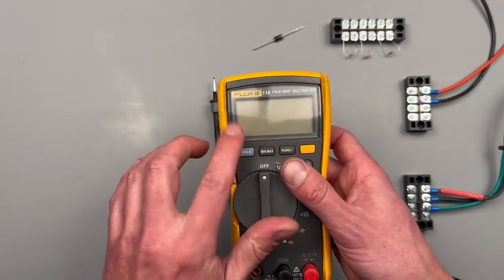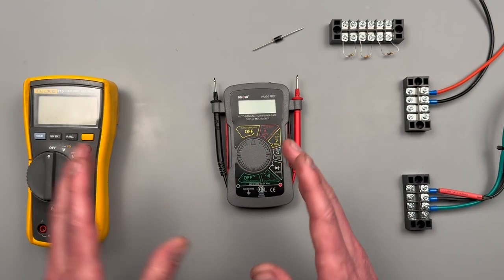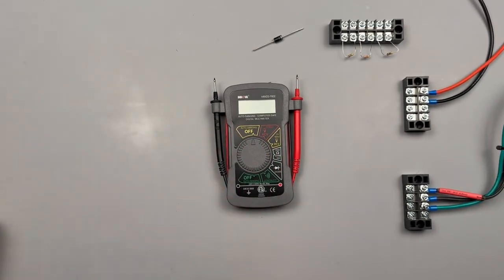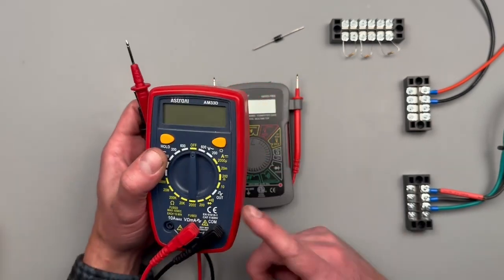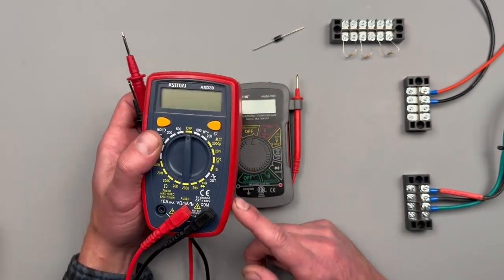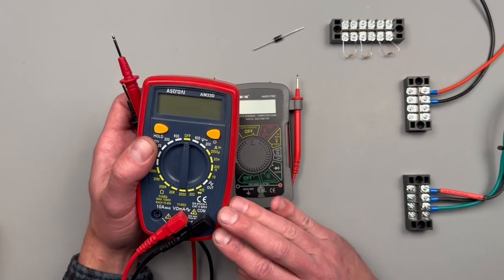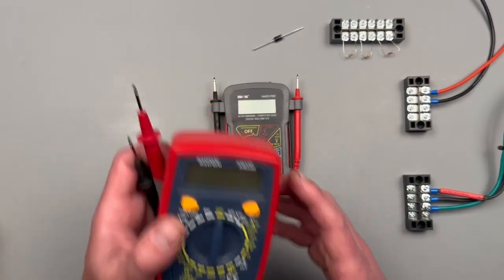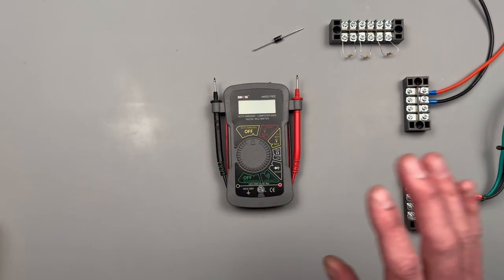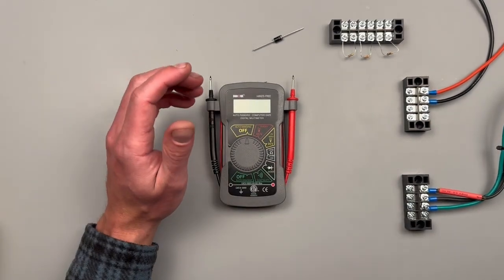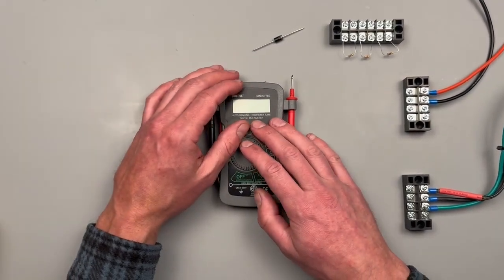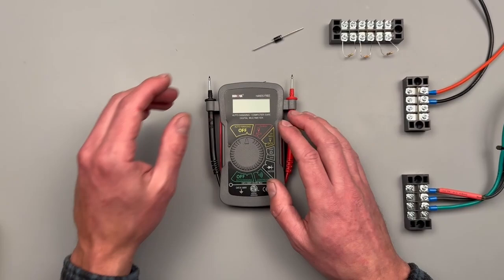We're going to do some measurements with the Fluke 115 to give some accuracy comparisons. For price point comparisons, this is an Astro AI AM33D, should be in my Amazon store. This is going to be about the same price as this, and I think for the application it's overall a way better pick.